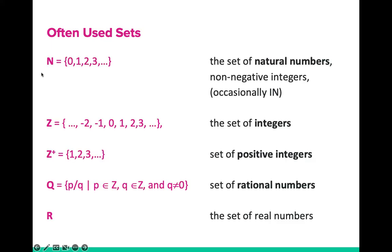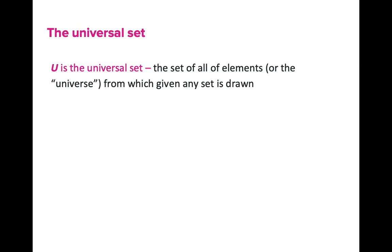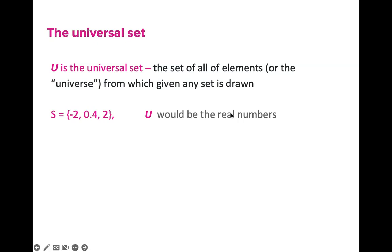These often-used sets can all be grouped into one big set which contains natural numbers, integers, positive integers, negative integers, rational and irrational numbers, and real numbers — we call this the universal set. U is the universal set, or the set of all elements or the universe from which any given set is drawn. Suppose we have set S containing −2, 0.4, and 2. Since S contains a negative integer, a decimal, and a positive integer, the universal set would be the real numbers.